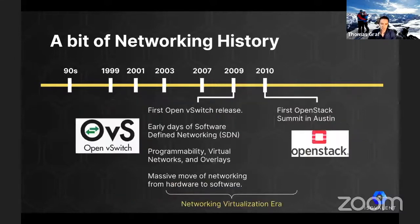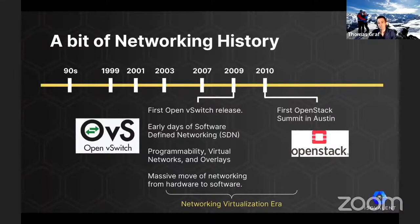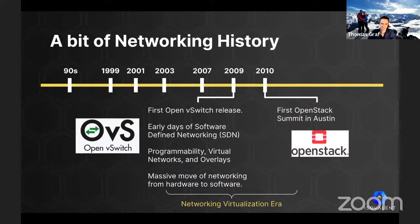It was the year 2009 when things got exciting again from a software networking perspective — the year of the first OpenVSwitch release. These were the early days of software-defined networking, or SDN. It brought massive programmability, virtual networks, and overlays to Linux. This was the start of the network virtualization era and led to a massive move of networking logic from hardware into software. 2010 was also the year of the first OpenStack Summit.